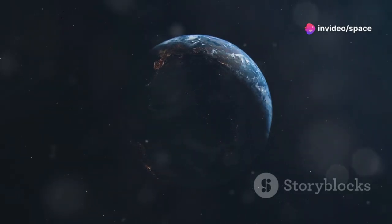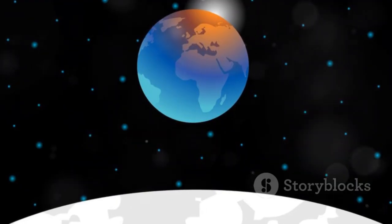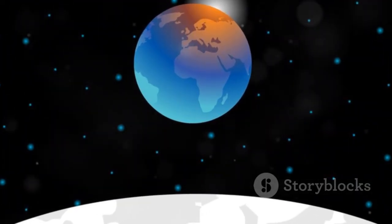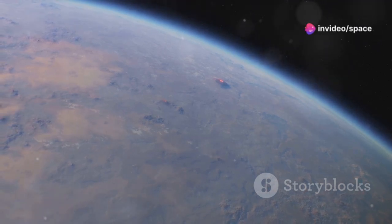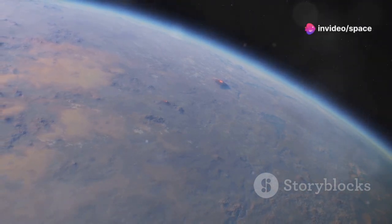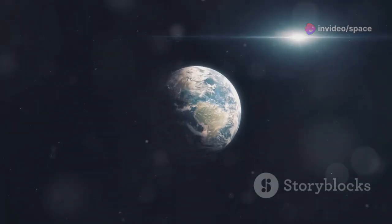Proxima b orbits its host star at a distance of roughly 7.5 million kilometers. That's about 20 times closer than Earth's orbit around the sun. This close proximity means that Proxima b completes an orbit around its star in just 11.2 Earth days. Imagine a year that's just over a week long.